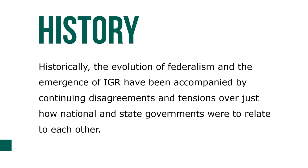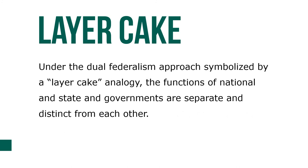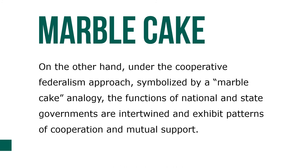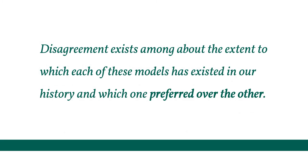There have been continual tensions over just how national and state governments were to relate to one another. Under the dual federalism approach, symbolized by a layer cake analogy, the functions of national and state governments are separate and distinct from each other. Under the cooperative federalism approach, symbolized by a marble cake analogy, the functions are intertwined and exhibit patterns of cooperation and mutual support. Disagreement exists about the extent to which each of these models has existed in our history and which one is preferred over the other.